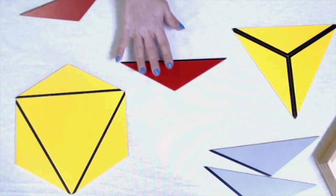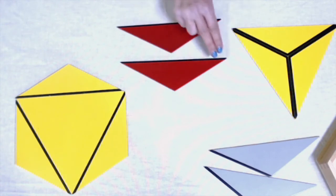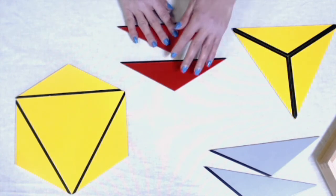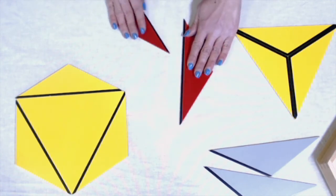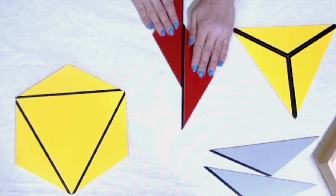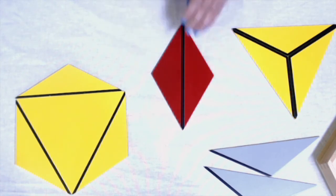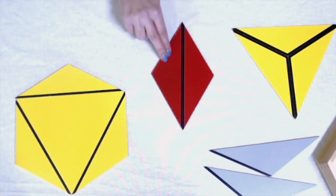I have two red isosceles triangles and they have one black line each. The black line is running along the bottom, longest line of the triangles. When my black lines meet all the way, I've made a new shape. I made a rhombus.